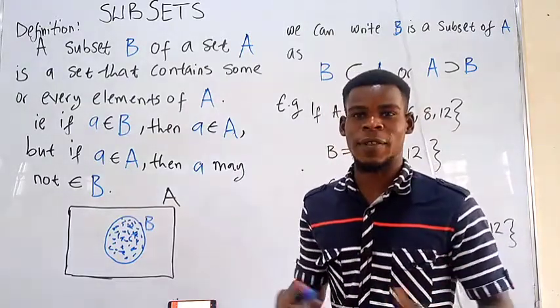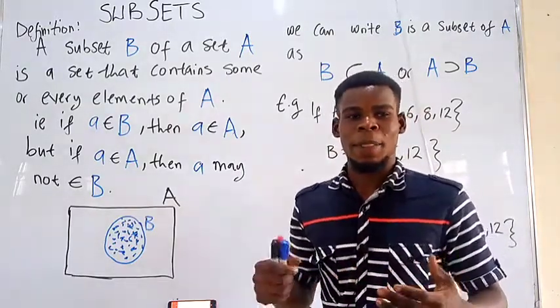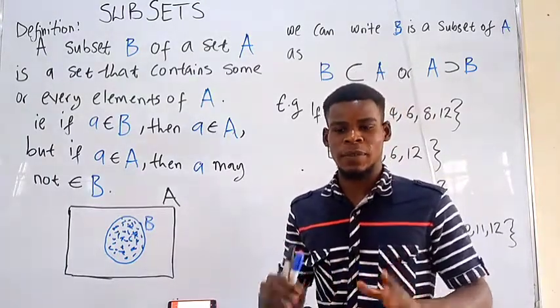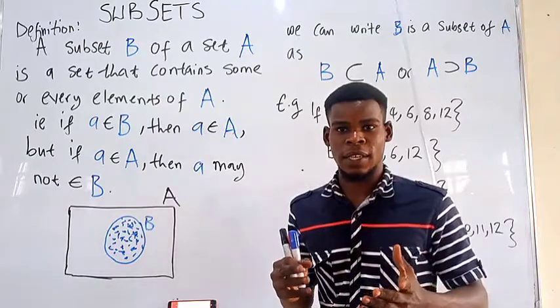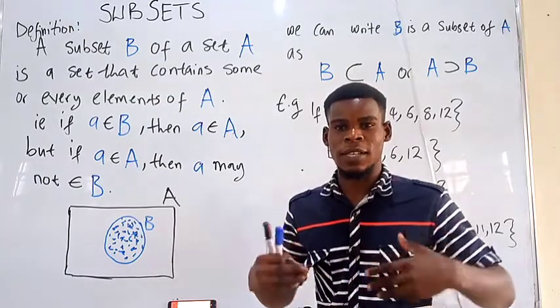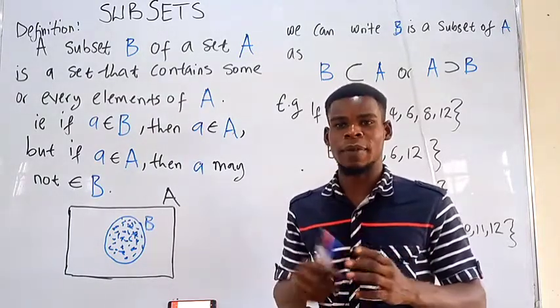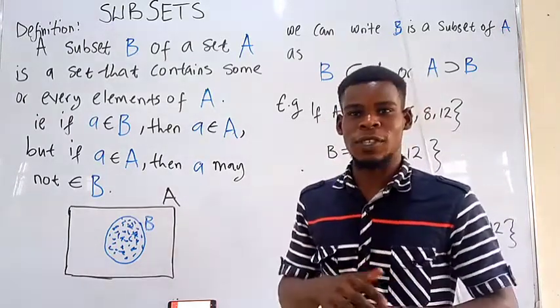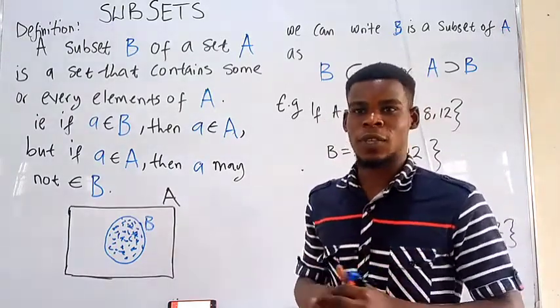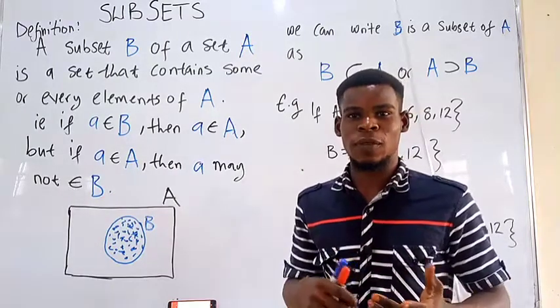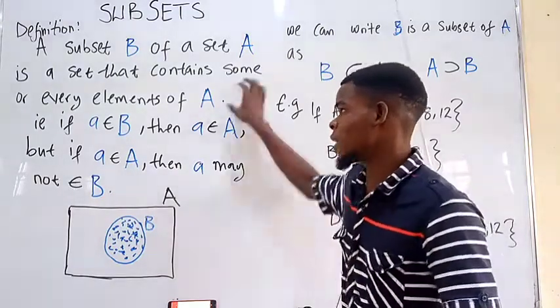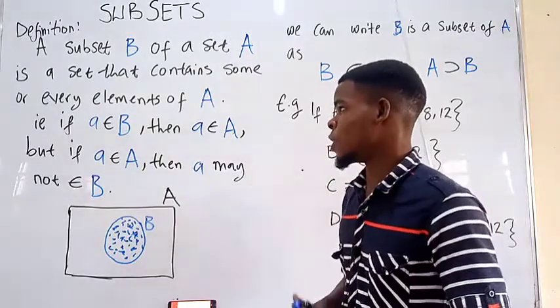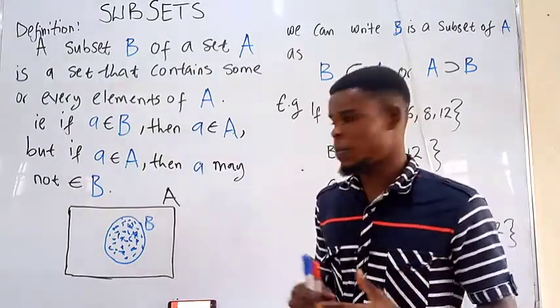Or we can say B contains every element of A. So if B is a subset of A, it means that primarily B contains some, not all, elements of A. Or there are other definitions in which we will say that B contains some element of A or every element of A, as I have written. I'm going to explain that later, but let's not focus here first. Just understand the meaning of subsets.